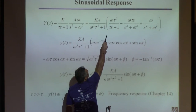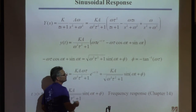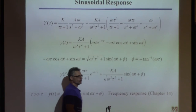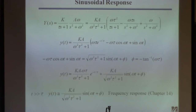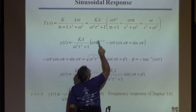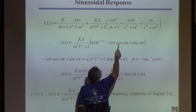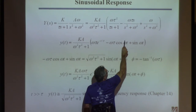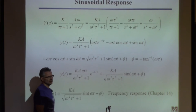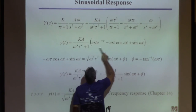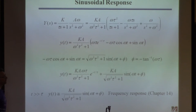We do partial fraction expansion and get a term over (tau s + 1), and another term of the form (alpha2 s + alpha3) over (s squared + omega squared). Taking the inverse Laplace transform term by term: the first yields an exponential (one tau cancels), the second uses the table entry for s over (s squared + omega squared) which is cosine(omega t), and the third entry is exactly a sine.